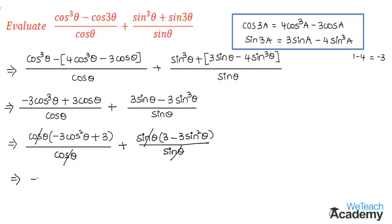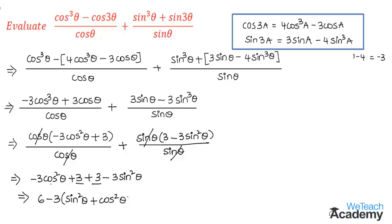We get minus 3cos²θ plus 3 plus 3 minus 3sin²θ. Adding the like terms 3 plus 3 gives 6. Taking minus 3 as the common factor from the remaining terms gives 6 minus 3(sin²θ plus cos²θ). Using the trigonometric identity sin²θ plus cos²θ equals 1, we substitute to get 6 minus 3 times 1, which equals 3.